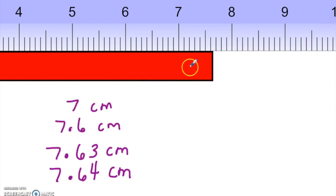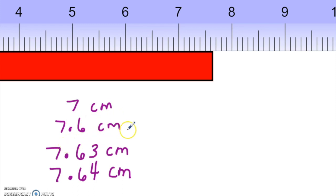For this next example, the ruler is set so we can see the rectangle is exactly 7 centimeters and some millimeters. What is the most precise way to write this measurement using significant figures? Would we write 7 centimeters? Is that the most precise? Or 7.6 centimeters? Or 7.63 centimeters? Or 7.64 centimeters? Using the definition of significant figures — digits measured with certainty, plus one estimated uncertain digit — our answer is definitely one of those last three choices.